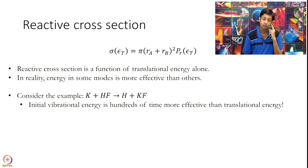Let us discuss a bit more. One important point we raised is that the reaction cross section we introduced earlier is a factor of only translational energy. That is incorrect experimentally speaking. You have many more factors on which this reaction cross section can depend. One simple example I can give you is this reaction of K plus HF going to H plus KF.